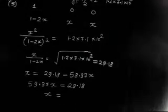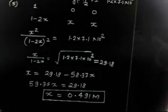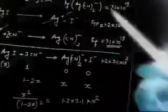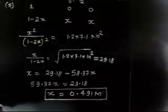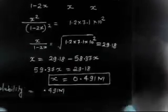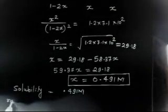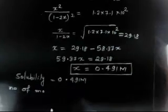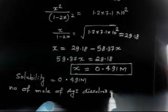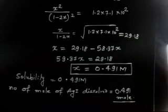So x = 0.491. This x represents the concentration of I⁻, which equals the concentration of Ag(CN)₂⁻, and this is the solubility of AgI: 0.491 M. Since the volume is 1 liter, the number of moles of AgI dissolved = 0.491 × 1 = 0.491 moles.